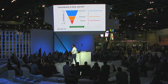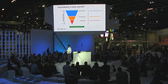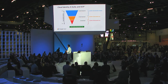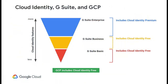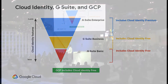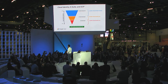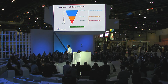Cloud Identity is built into your G Suite. If you're using G Suite Basic, Business, or Enterprise, most of the Cloud Identity free features are already built in. It's also available for GCP. Cloud Identity Premium features are part of your G Suite Enterprise licenses, but you can also add on Cloud Identity Premium to your G Suite Basic or Business SKUs.